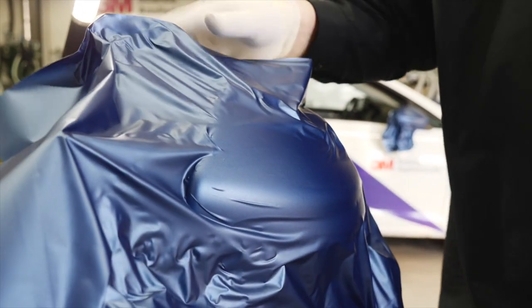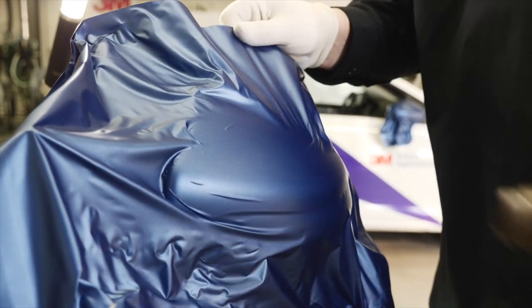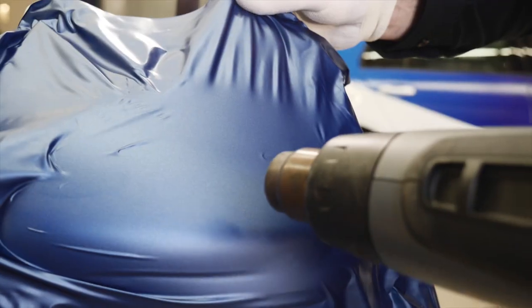Lift the film, apply heat and let it shrink around the mirror shape. Repeat this process step by step until the edge of the mirror is covered by film.